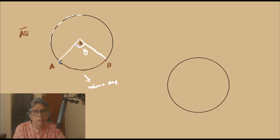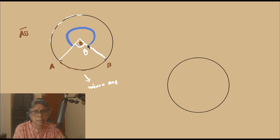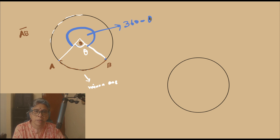Meaning the points are the same — the endpoints are the same — but the angle is going to be the reflex angle. This angle, that is the angle subtended by the major arc, would be 360 minus theta.